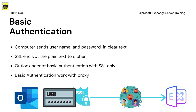In basic authentication, a client computer sends the username and password in clear text. Because we have an SSL certificate, it encrypts the plain text and that is how it gets protected. Outlook does not allow you to select basic authentication without selecting SSL. Basic authentication requires the user to enter the domain name, username, and password. The advantage is that it works with reverse proxy firewalls.